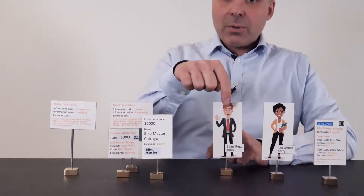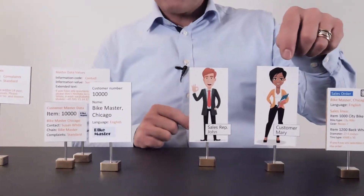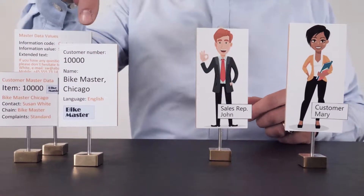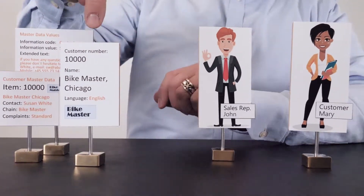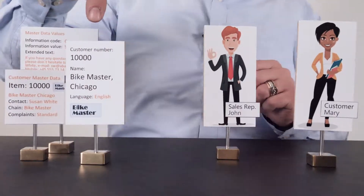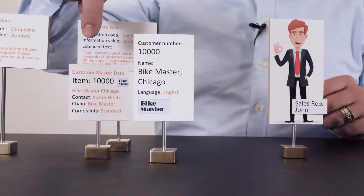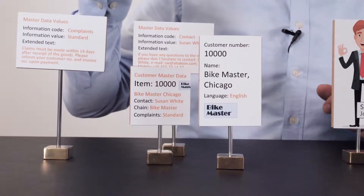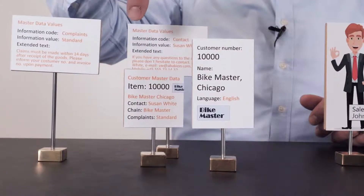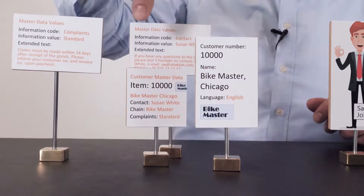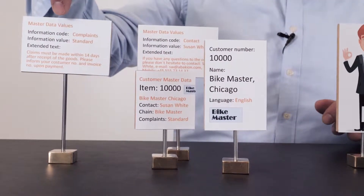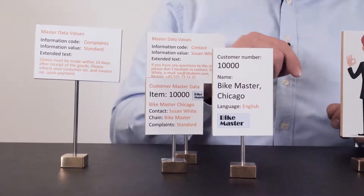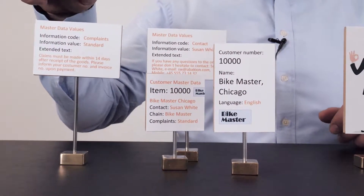In this example we have a sales rep, John, who wants to sell to customer Mary. In his Business Central solution he has created a customer card and added the Bike Master on which Mary works. He set the language to English because she's an English customer. With master data he has added information on this customer — for instance the contact person is Susan, and information about complaints and chain relation. The complaints extended text in the master data module states that complaints have to be done within two weeks, etc.